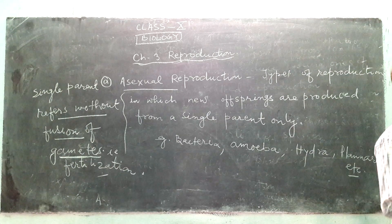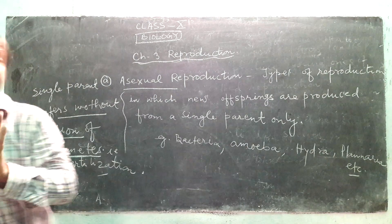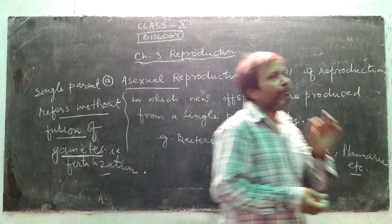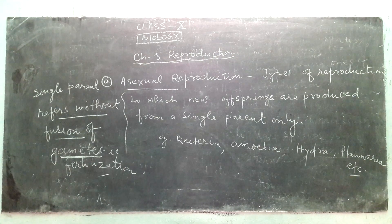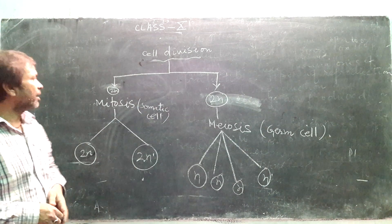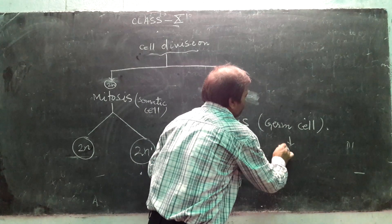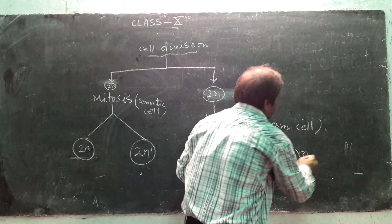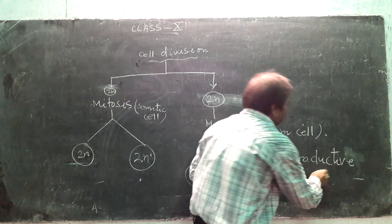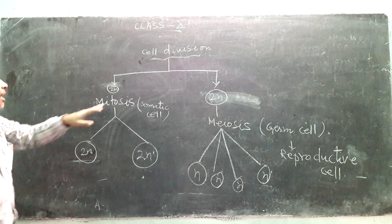We have to focus on the basic concept of cell division, that is mitosis and meiosis. In our body there are two types of cells: first, somatic cells, and another one is germ or reproductive cells. Cells that take part in reproduction are called reproductive cells. Now what is mitosis?